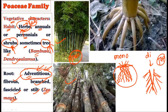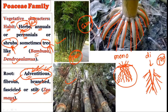For example, in Zea mays (maize), you can observe roots present outside the soil — these are called stilt roots. They provide mechanical support to the plant during windy conditions, helping it maintain an erect posture. These stilt roots are a special adaptation of Poaceae members, and their adventitious root system is characteristic because it is a monocotyledonous family.